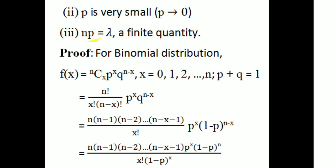NP equal to lambda. Lambda is the parameter. For the Poisson distribution, the mean equals lambda. For the binomial distribution, the PDF of x is equal to nCx into p raised to x into q raised to n minus x, where x = 0, 1, 2, 3, ..., n and p plus q equal to 1.